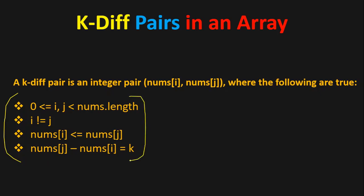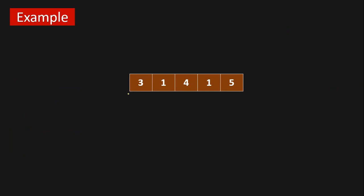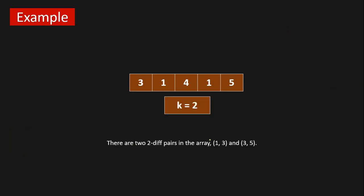For example, if you're given this array and k equals to two, then we have two pairs: (1,3) and (3,5), that follow our four conditions. For (1,3): three minus one is two, which equals k. For (3,5): five minus three equals k.